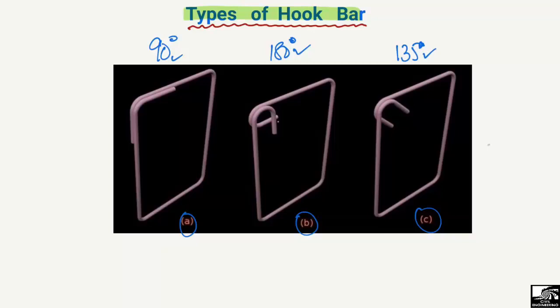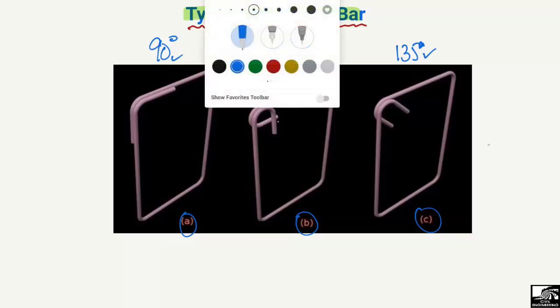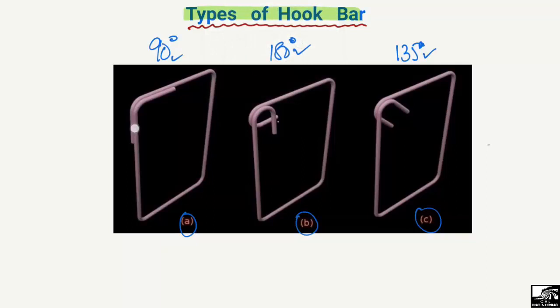Now, how are these hooks classified? Consider the 90 degree hook. This is the first part of the hook, and it has been bent. Looking at the bent part, the angle between the two portions is 90 degrees. That is why it is known as the 90 degree hook.